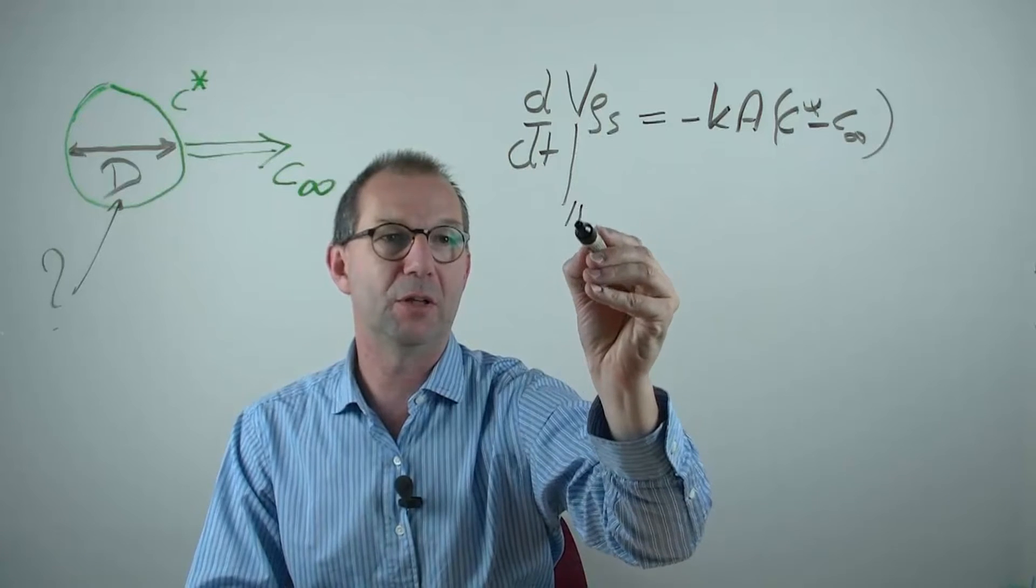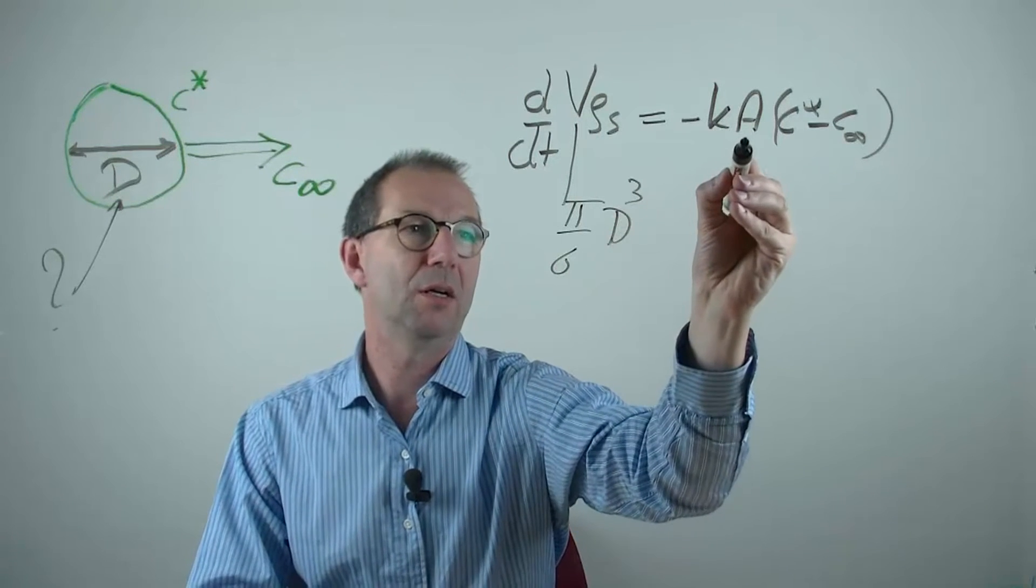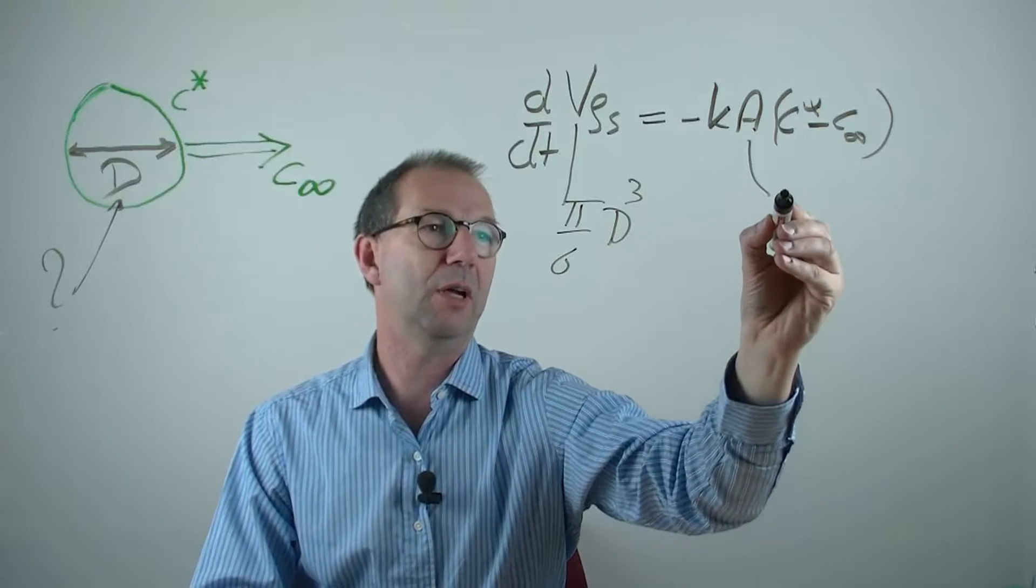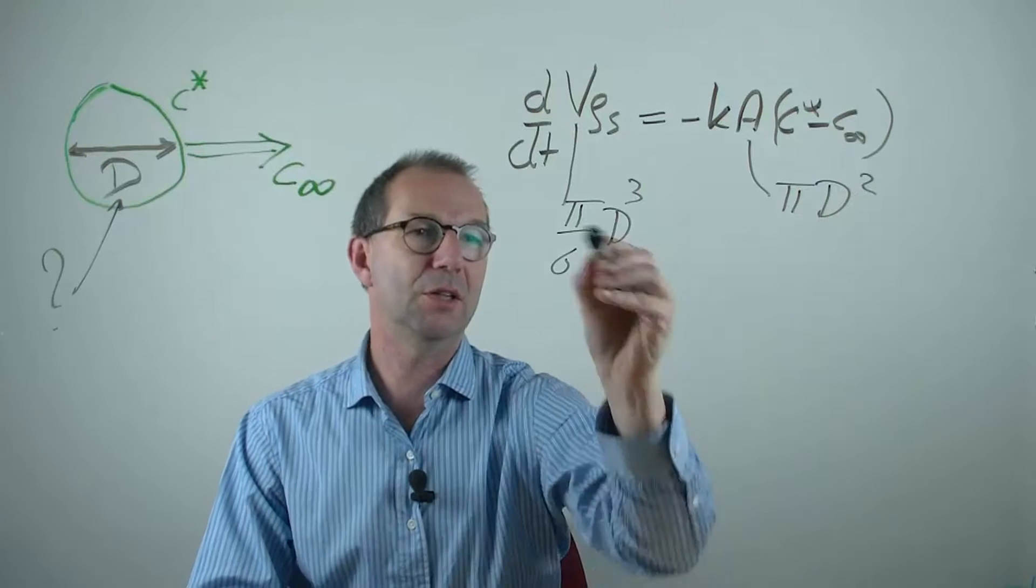The volume of the sphere is pi over 6 D cubed. The outer area of the sphere is pi D squared. These are the obvious ones.